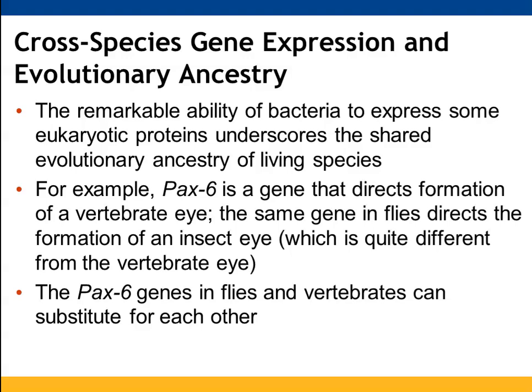The reason bacteria can express some eukaryotic proteins relates to the shared ancestry of living species. For example, pax-6 is a gene that directs vertebrate eye formation; the same gene in flies directs insect eye formation. Insect and vertebrate eyes function quite differently, yet the pax-6 genes found in flies and vertebrates do share a relationship and can substitute for one another.